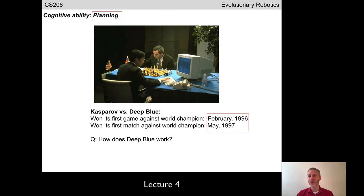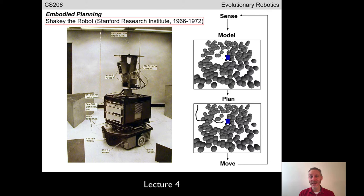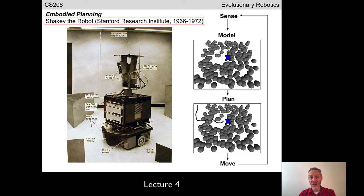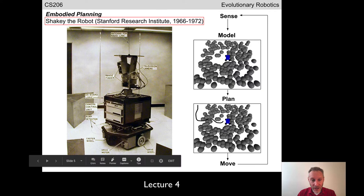We were looking at this idea of embodied cognition by engineering various aspects of intelligence. As Turing mentioned, we may never be able to define intelligence exactly, but we know some of the things that make up intelligence, and planning is one of them — the ability to see ahead and avoid getting caught in dead ends. Back in the late 90s, IBM's Deep Blue was clearly a very good planner and was able to beat the grand master at chess.